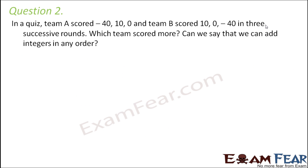Question number 2. In a quiz, team A scored minus 40, 10, 0 and team B scored 10, 0, minus 40 in 3 successive rounds. So this is like the score of round 1, round 2, round 3. Similarly, round 1, round 2, round 3 for team B.